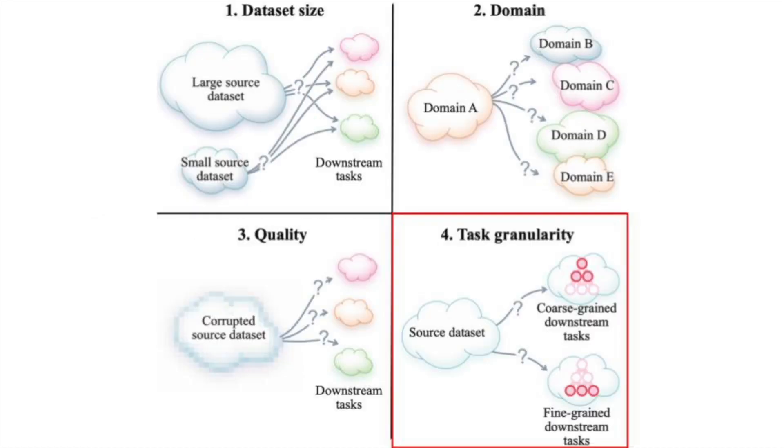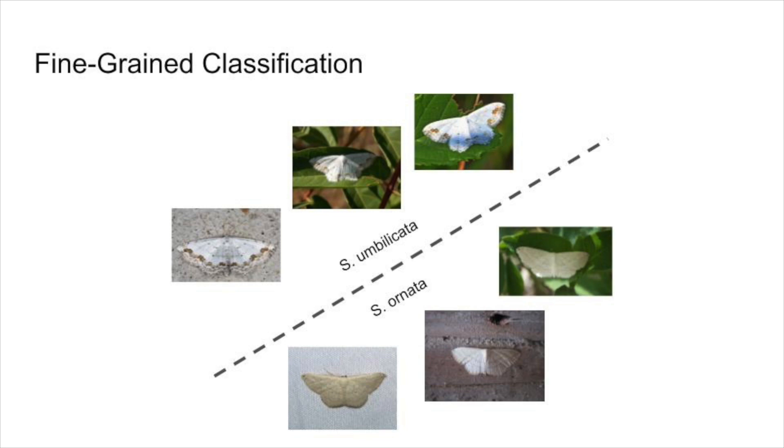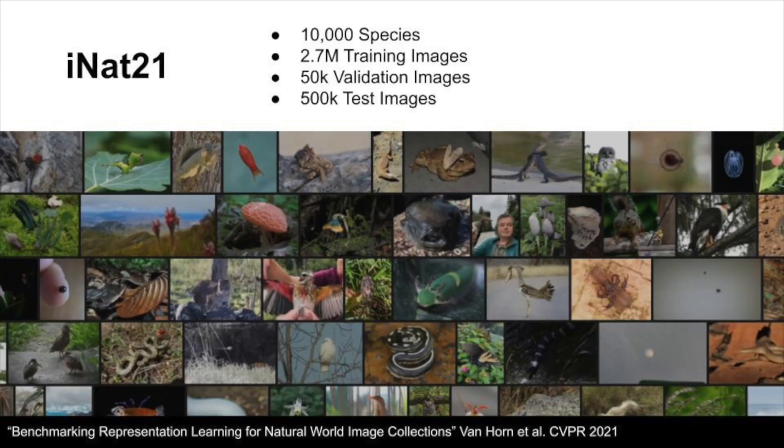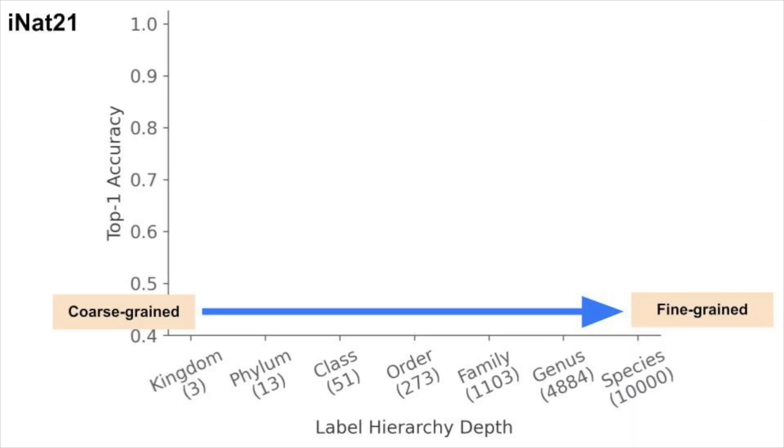Now let's consider task granularity. Fine-grain classification involves distinguishing between categories that differ in subtle ways. The state-of-the-art fine-grain classification dataset is iNat21. We use the hierarchical structure of iNat21 to evaluate trained classifiers at different levels of granularity.